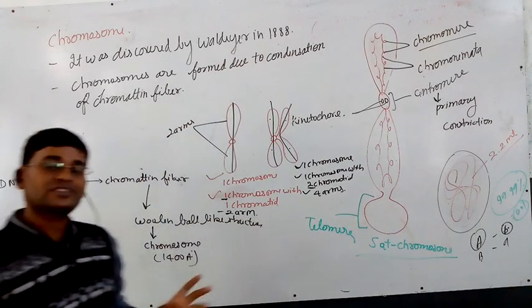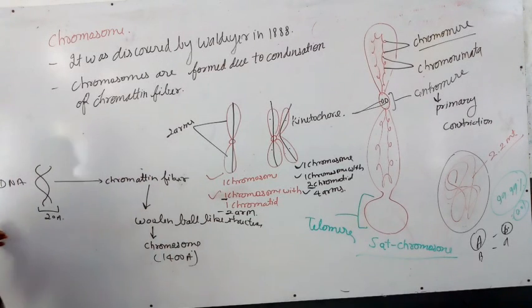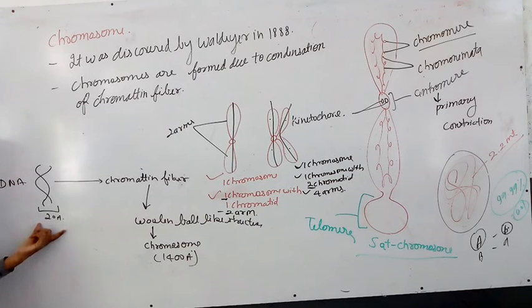Chromatin fibers are called chromatin fibers. The third point is DNA. DNA is called nucleoprotein. Protein is known as a histone protein.